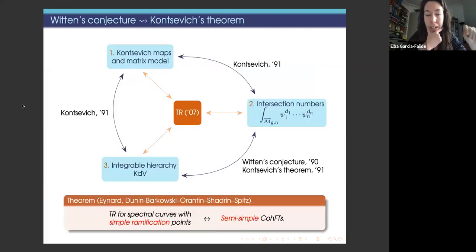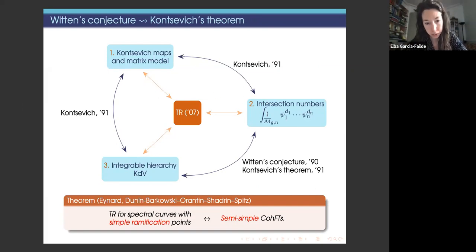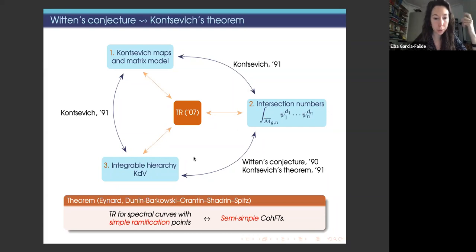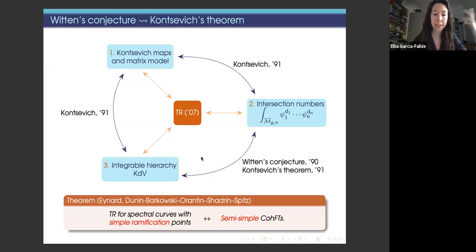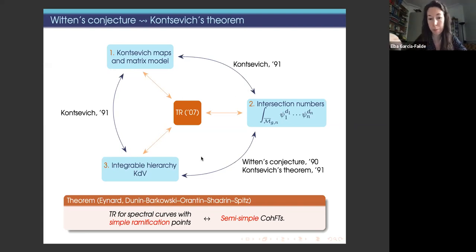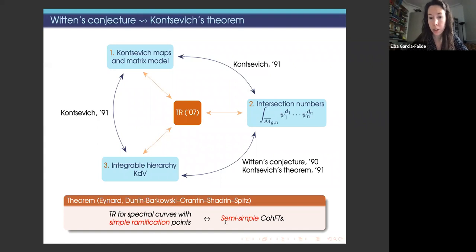We understand the relation of topological recursion with the other vertices of the picture. There is a very useful result by Eynard, later generalized by Dunin-Barkowski and others, which tells us that there is a correspondence between topological recursion for spectral curves with simple ramification points and semi-simple cohomological field theories in general. However, Witten's class is not semi-simple, so we cannot study it directly using this theorem.